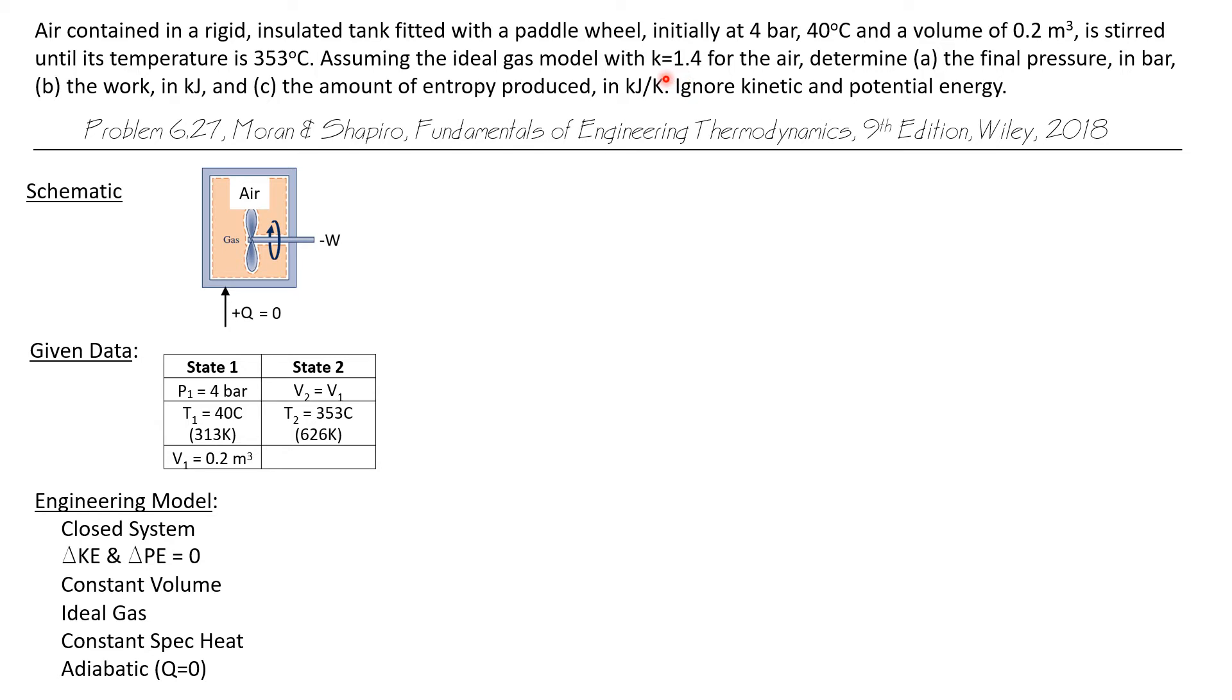K is the ratio of specific heats. It's C sub P over C sub V. So if K is constant, then C sub P and C sub V are constants as well. And also, because it's insulated, we're going to treat this as an adiabatic system with Q equals 0.